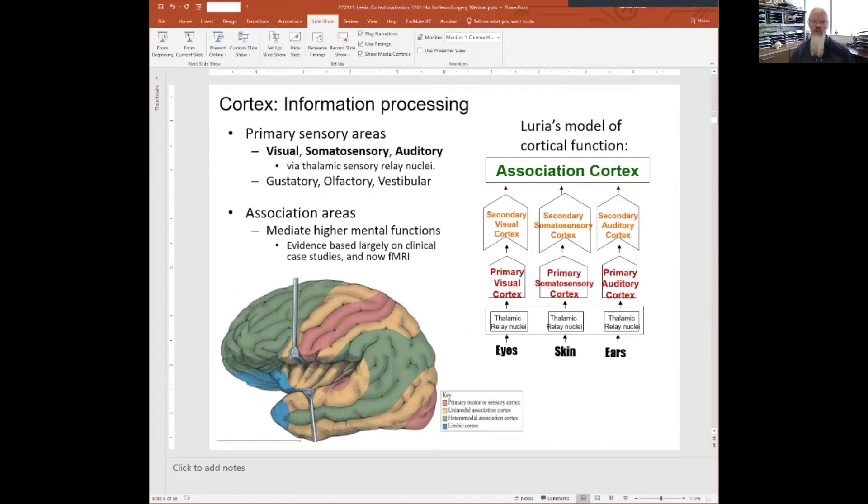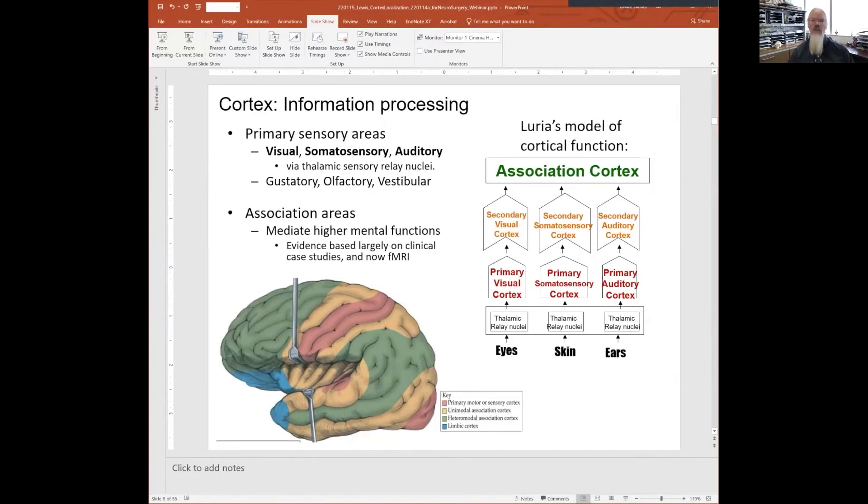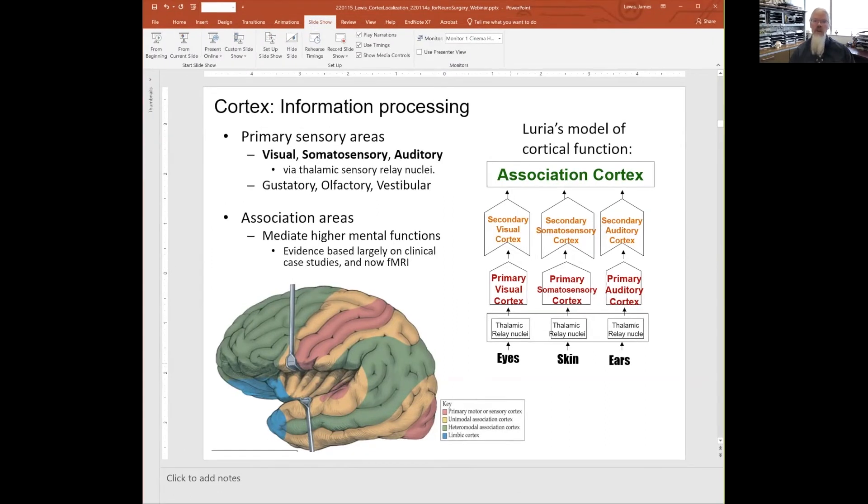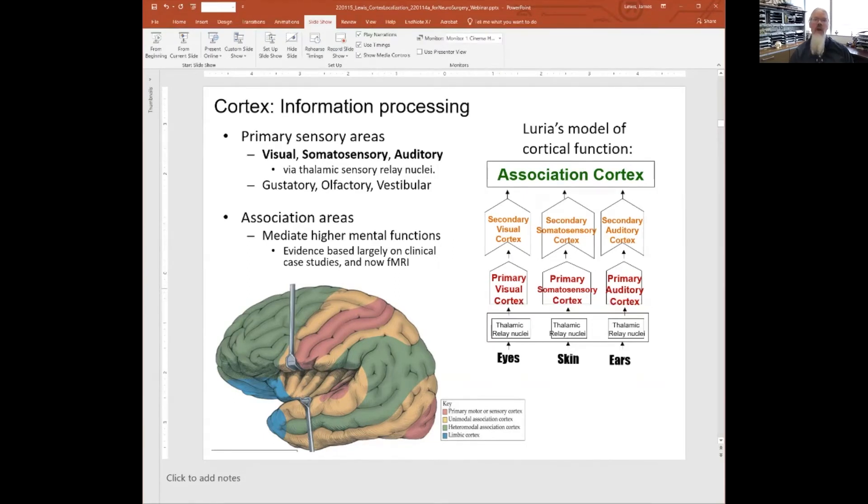The flow of information—the general organization for the brain—comes from the Luria model, where we have sensation coming in from the eyes, skin, and ears, going up through relay nuclei in the thalamus, then up into primary visual, somatosensory, and auditory cortices. From there, it goes into secondary or association cortices, and ultimately all this information comes together in associations.